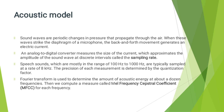The acoustic model: sound waves are periodic changes in pressure that propagate through the air. When these waves strike the diaphragm of a microphone, the back and forth movement generates an electric current. An analog to digital converter measures the size of the current, which approximates the amplitude of the sound wave at discrete intervals called the sampling rate. Speech sounds, mostly in the range of 100 Hz to 1000 Hz, are typically sampled at a rate of 8 kilohertz. The precision of each measurement is determined by the quantization factor.